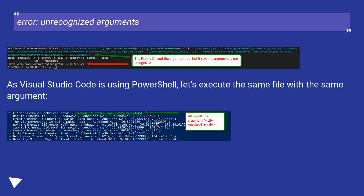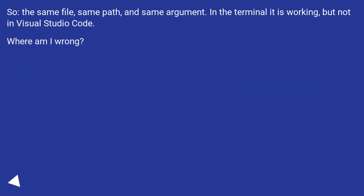Error: unrecognized arguments. As Visual Studio Code is using PowerShell, let's execute the same file with the same argument — same file, same path, and same argument. In the terminal it is working, but not in Visual Studio Code. Where am I wrong?